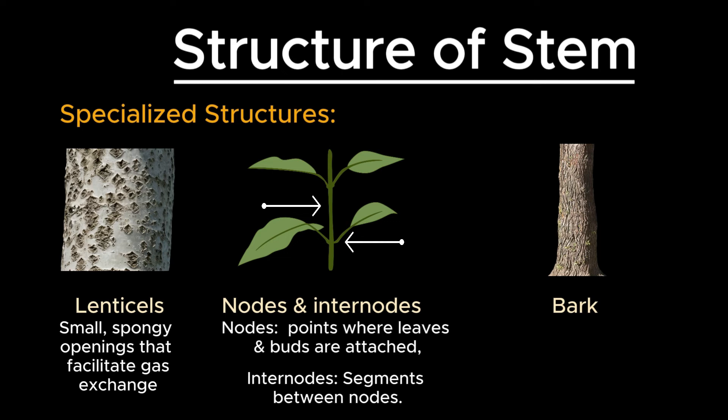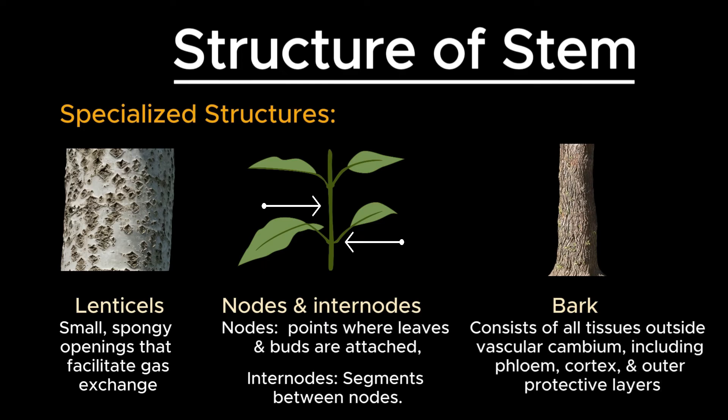In woody plants, the bark consists of all tissues outside the vascular cambium, including the phloem, cortex, and outer protective layers. The bark protects the stem and reduces water loss.